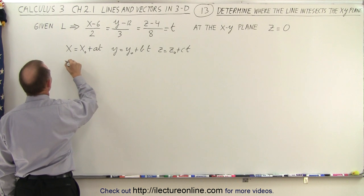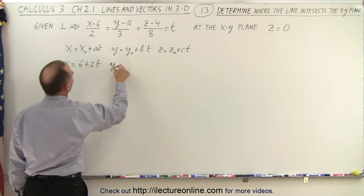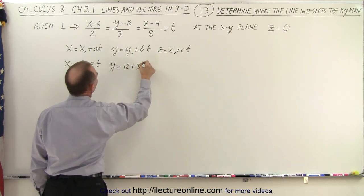So in this case, we get x is equal to x sub 0, which is 6, plus 2t. y is equal to y sub 0, which is 12, plus 3t.